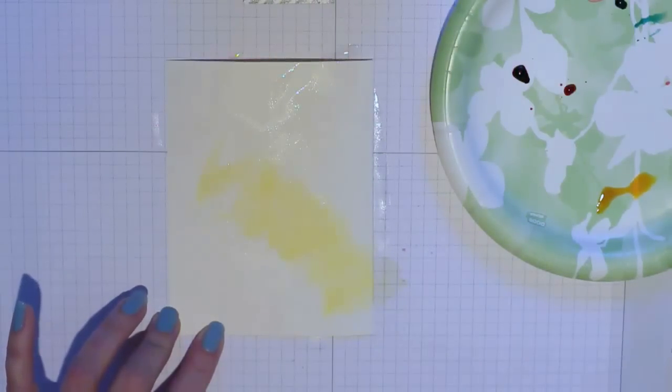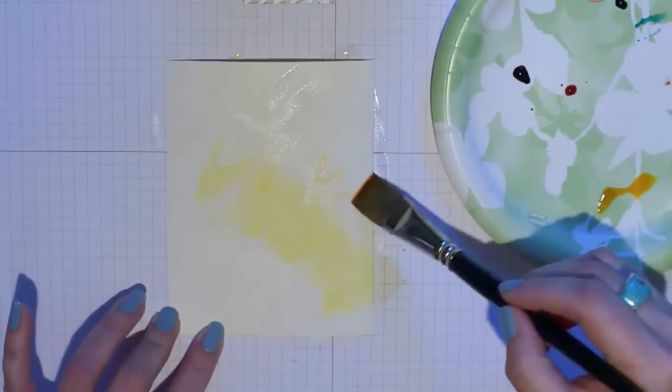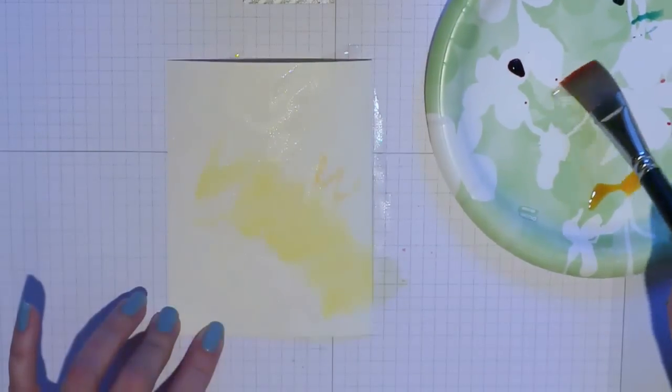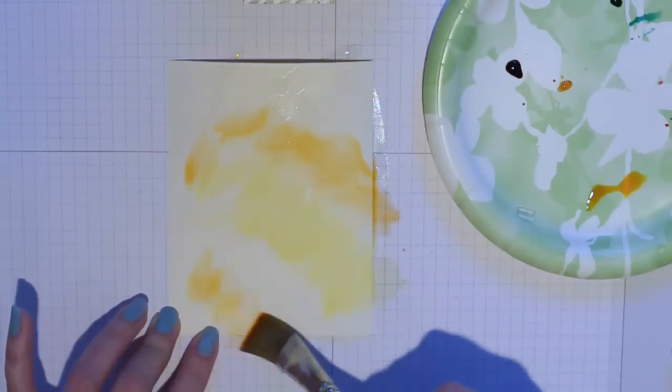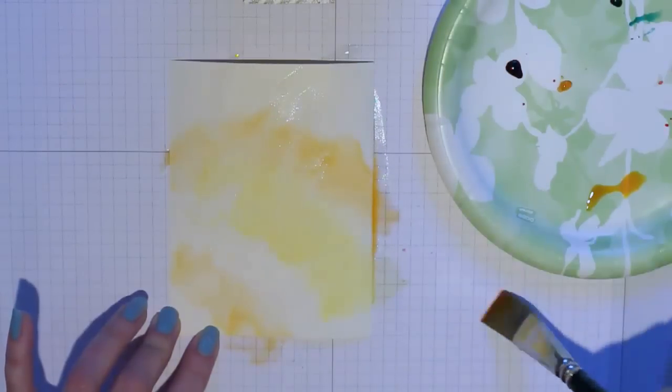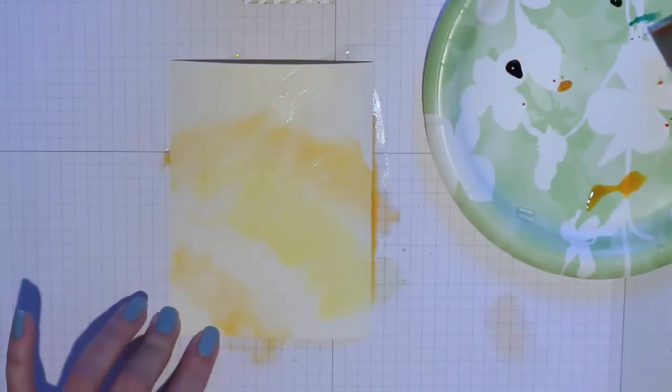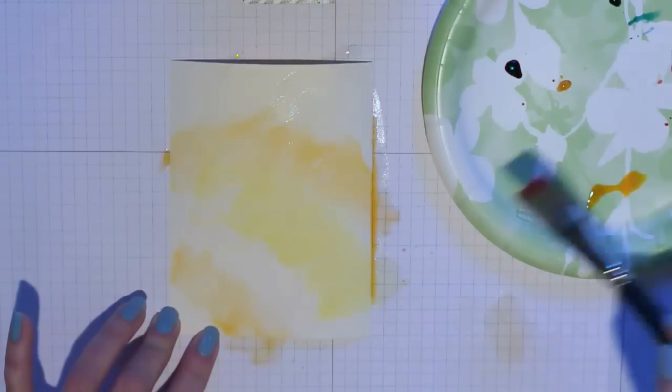Now I'm going to take a Daffodil Delight reinker and a Pumpkin Pie reinker and really kind of water them down. I want this to be a very pale wash in the background so you want to add a lot of water and just a little bit of ink.